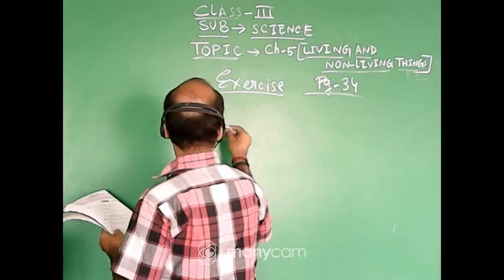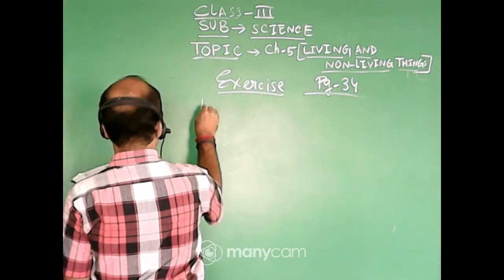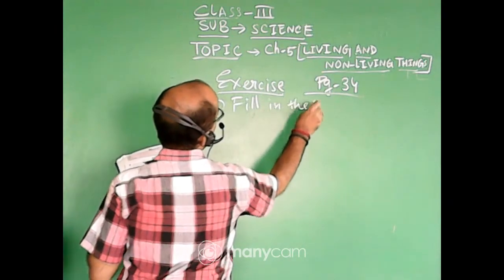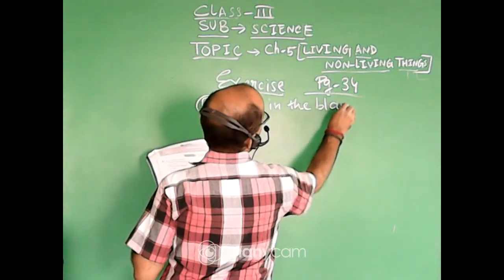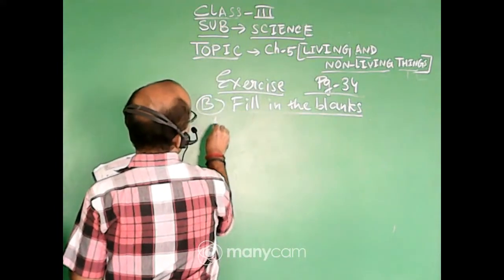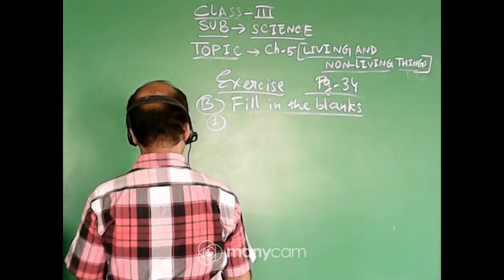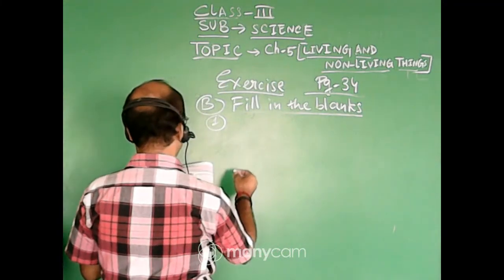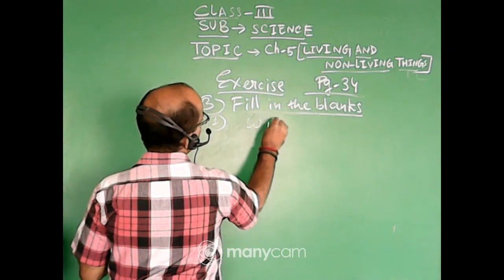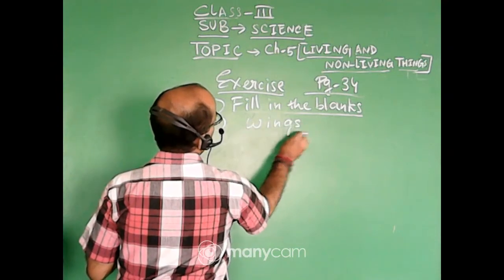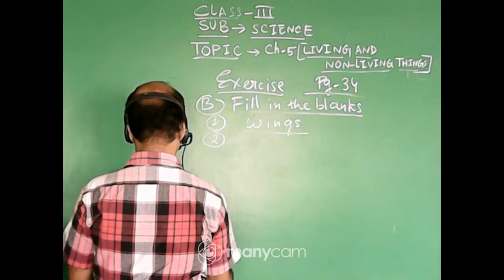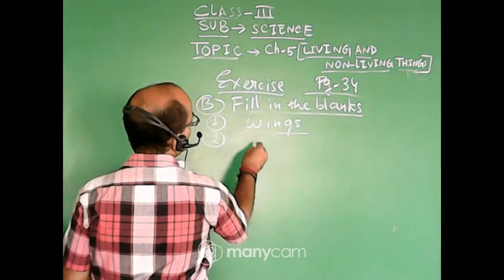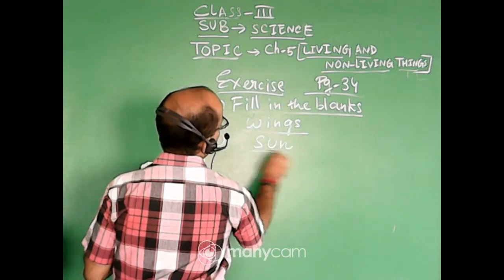Fill in the blanks. See here. Birds have dash to fly. So your answer is birds have wings to fly. Number 2. Sunflower always turns towards the moon or sun. It is sun. So the name is sunflower.